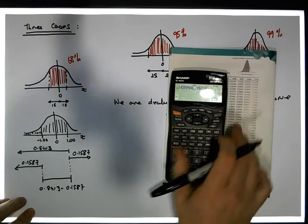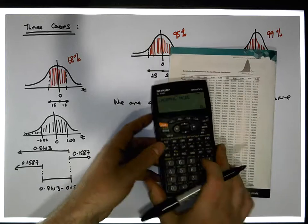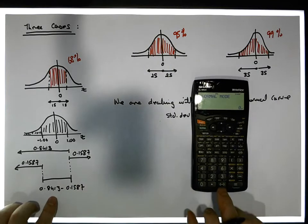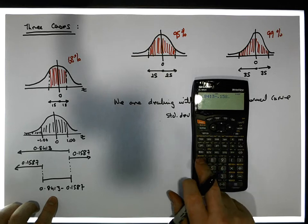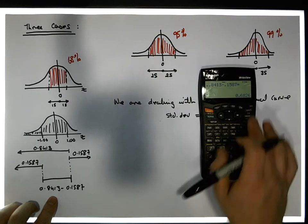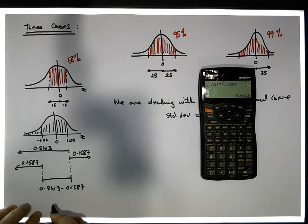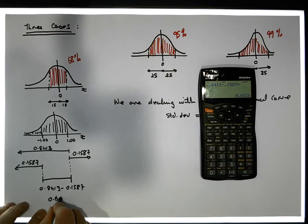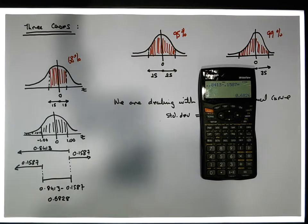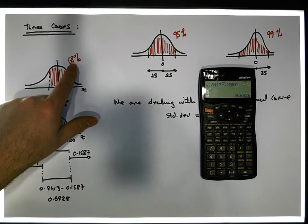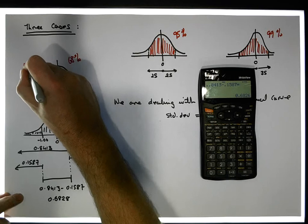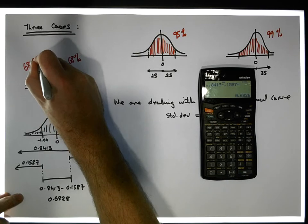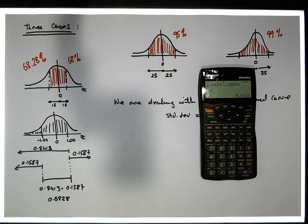So what does that give us? We have 0.8413 minus 0.1587, which gives us a value of approximately 0.6828. So to be correct, one standard deviation on either side of the mean captures 68.28% of the area — correct to two decimal places. So if you want to be that accurate about it, it's 68.28%.